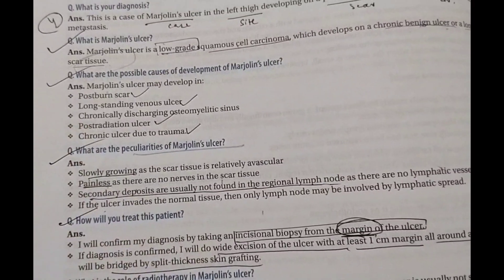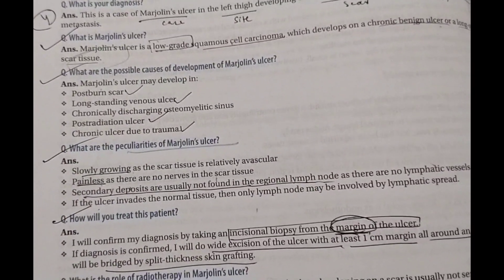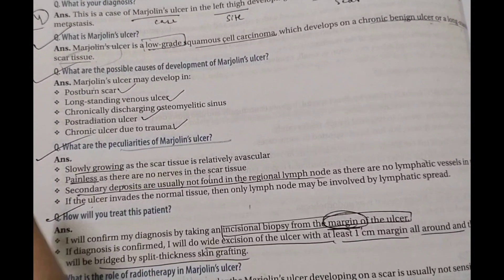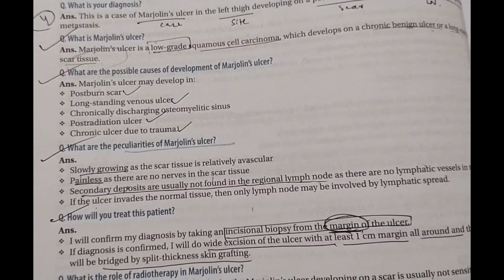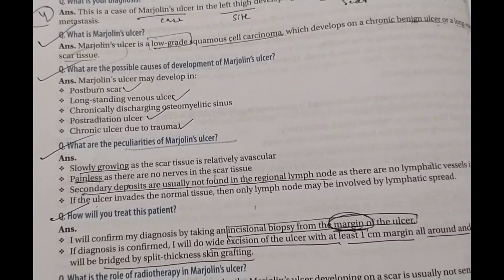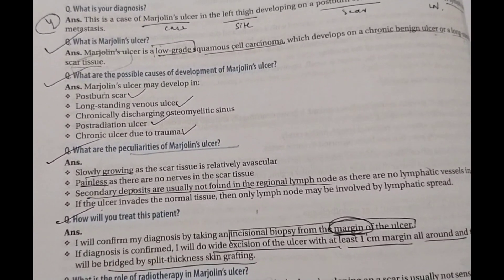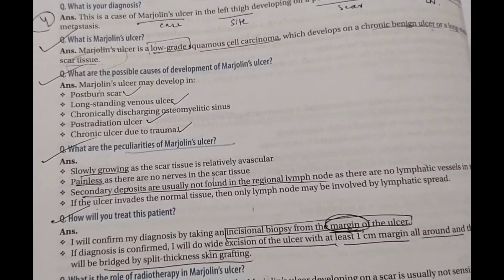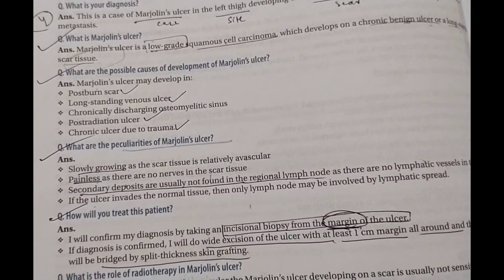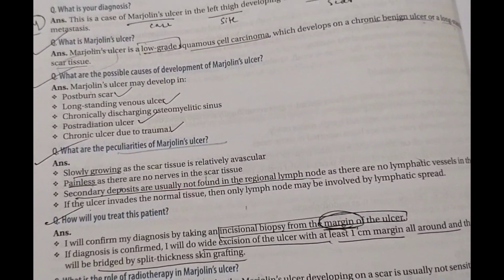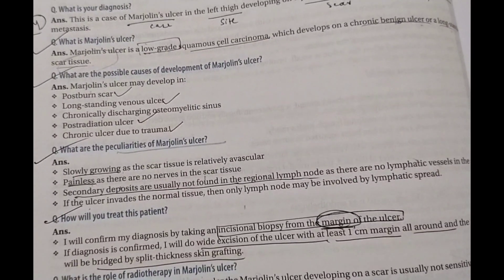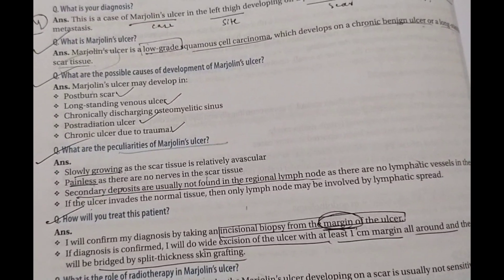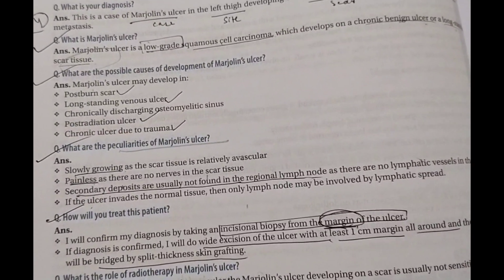However, if the ulcer invades normal tissue, there can be enlargement of lymph nodes of that normal tissue — but it will not be the original regional lymph nodes. Now, when a patient comes to you, you describe the ulcer — its site, duration, progression, pain, discharge, etc. As a doctor, examination of the ulcer is very important.